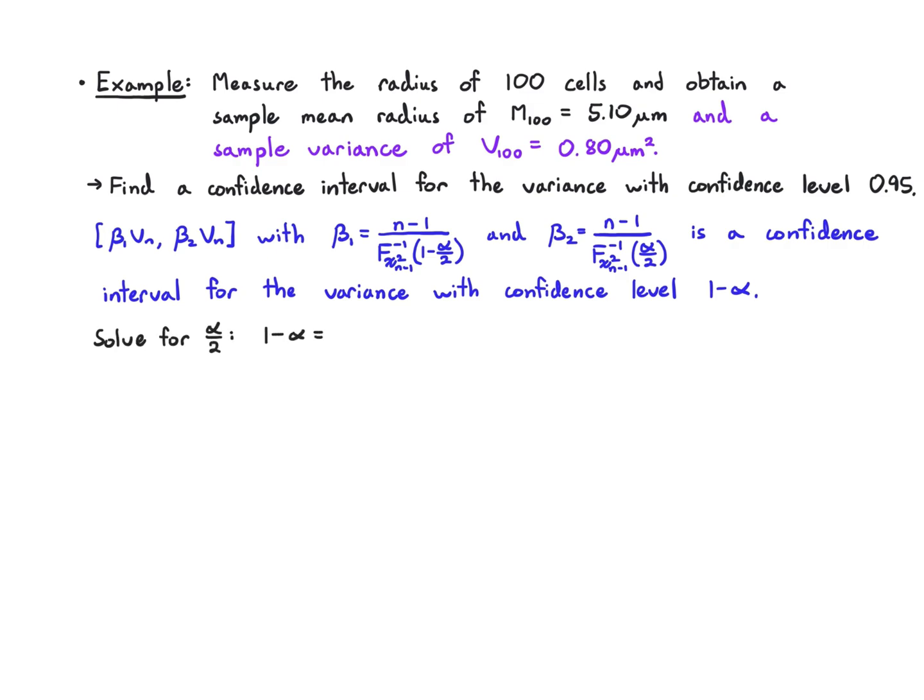That again is going to give the same answer we've had throughout. It's going to be 0.025. And we also need 1 minus alpha over 2, which is 0.975 in this example.